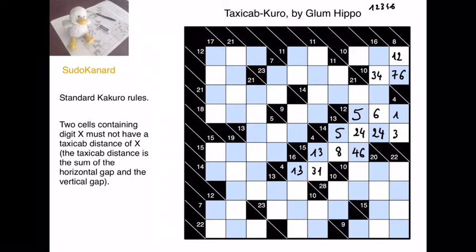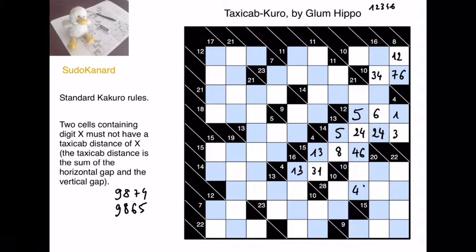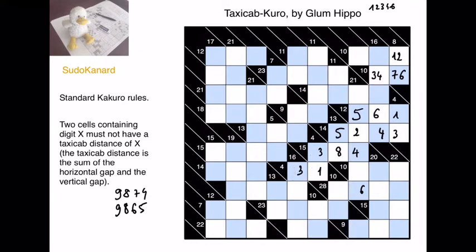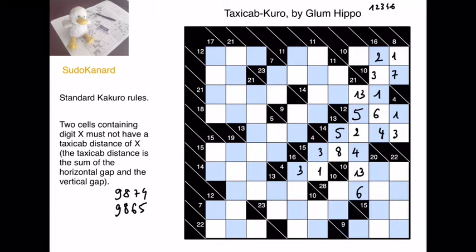3 could be in any one of those cells — no, 3 wouldn't work here. With the sum 28, which has only 2 decompositions, only 6 and 4 work here. So now we get this 2 and this 4. This 4 sees this cell at a taxicab distance of 4, so this one is a 6 and this is a 4. We get this 3, 1 and 3. And 1 and 3 there. This 4 now makes this a 3 with a 7 and a 1. And now 1 and 2 and 7. Get this 3 and this 1.